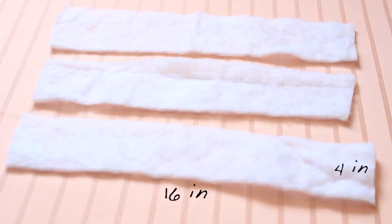The first thing you're going to want to do is cut three pieces of quilting batting, 4x16 inches.